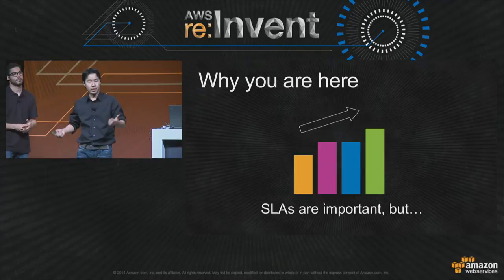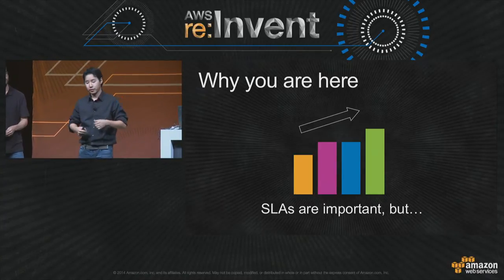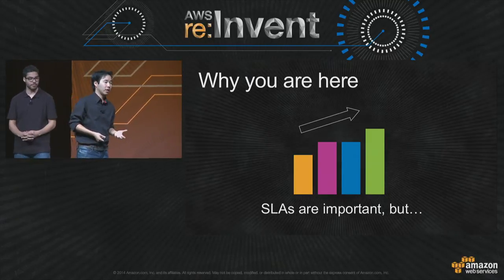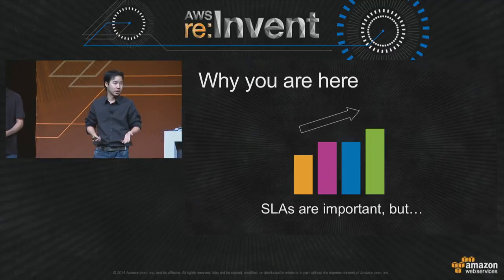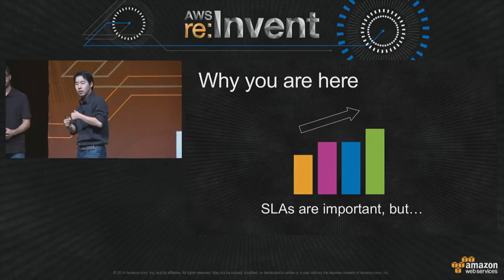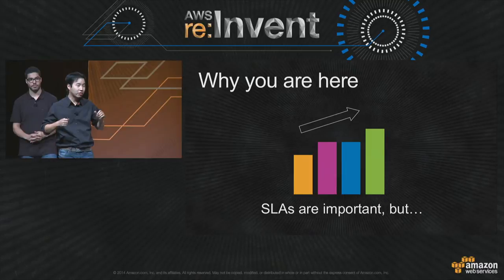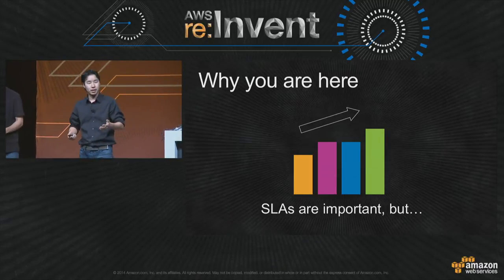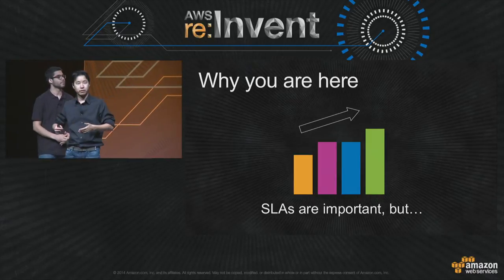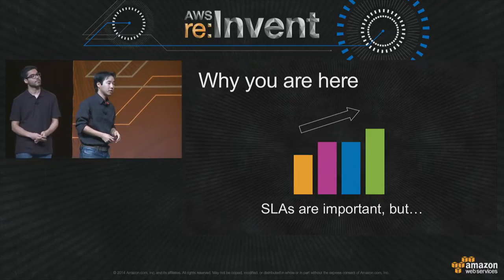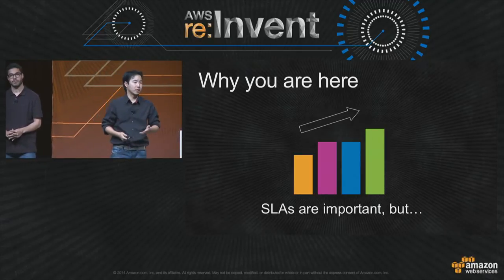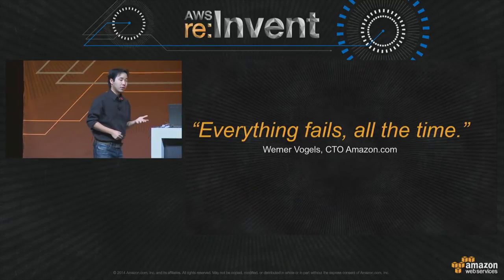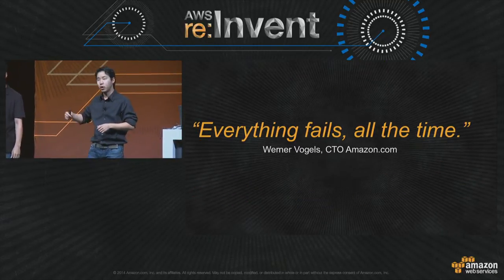We all know what our SLAs are. We all care about our application SLAs and our infrastructure SLAs. They are all very important. But if you have a failure and your website is down, the SLAs won't do a thing for you. Suddenly, a lot of bad things can happen — people tweeting bad things about your company, financial problems, your branding being affected. Like our CTO Werner Vogels always says: everything fails all the time. And that's really true.